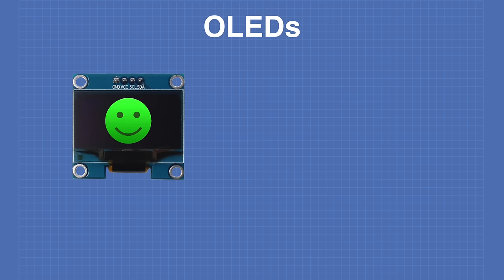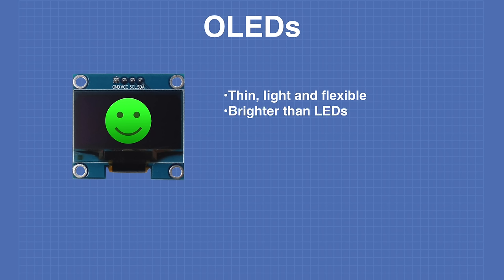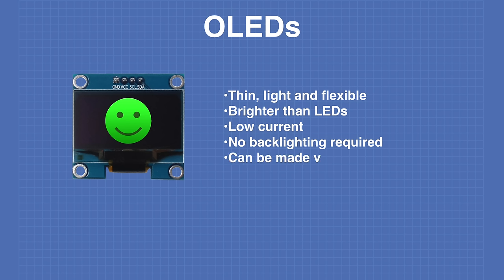OLEDs have several advantages: they're thinner and lighter than LCDs and LEDs, and they can also be flexible, allowing the use of curved displays. OLEDs are brighter than standard LEDs and consume very little current. They don't require any backlighting like LCDs do. You can create very large OLED screens because OLEDs are printed onto a substrate. OLEDs also have a very wide field of view approaching 170 degrees, so they look good from any angle.